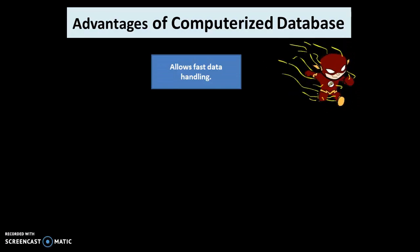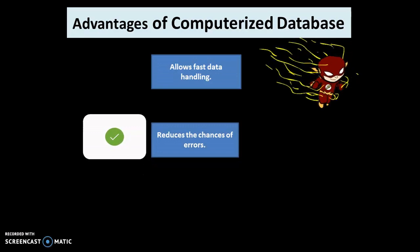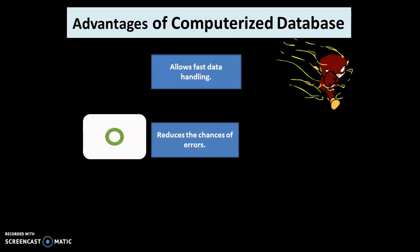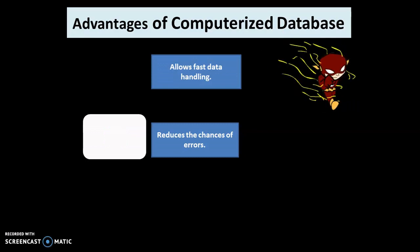Second, it reduces the chances of errors. Yani ki agar aap apne data ko computerized way mein maintain karte hain toh aapko data ka modification and updation of records becomes really easy for you. Isi liye aapke mistakes ke chances bhi kam hote hain.